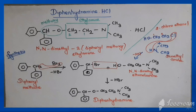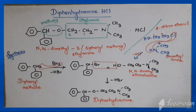Now we will see the synthesis of diphenhydramine. The starting material is diphenylmethane. Diphenylmethane undergoes bromination by means of bromine; H combines with Br and is removed as HBr, giving the bromo derivative. With the bromo derivative we add N,N-dimethylethanolamine. Ethanolamine is ethanol where one carbon is replaced by an amino group; the two hydrogens on nitrogen are replaced by methyl groups, giving N,N-dimethylethanolamine.